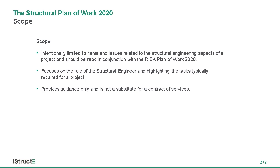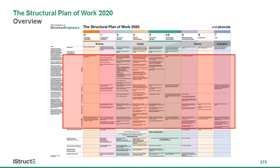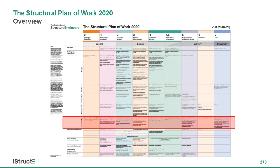The scope was intentionally limited to structural engineering and focusing on the role of the structural engineer. It is very important to say it is guidance only and not a substitute for contractor services. The main part of the overview, very similar to the RIBA plan of work, is that we have a section on the core tasks. For the structural plan of work, we've divided these into five areas: design, interface, construction management, and we've added a core task of sustainability.